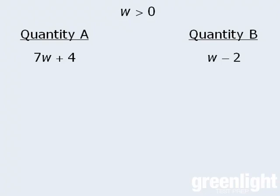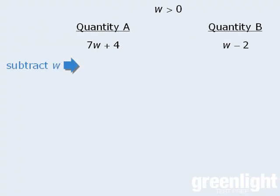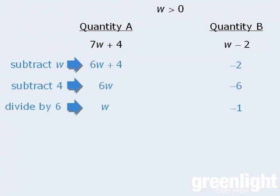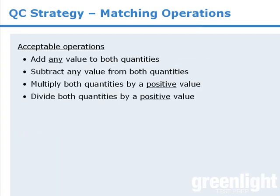In this question, it would be much easier to compare the quantities if the variables were on one side and the non-variables were on the other side. To accomplish this, let's first subtract w from both quantities to get the following. Next, we'll subtract 4 from both quantities to get this. At this point, the variable is on one side and the constant term is on the other side. From here, we can simplify matters even further by dividing both quantities by 6 to get the following. Since the given information tells us that w is greater than 0, we know that w is positive. As such, w must be greater than negative 1, which means the correct answer here is A. We were able to solve this question by performing a combination of these acceptable operations on both quantities.